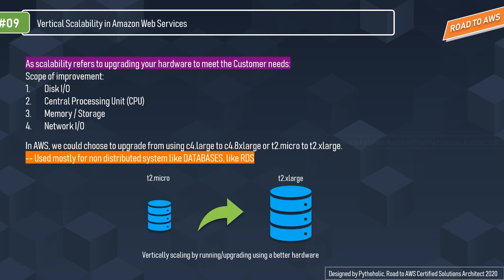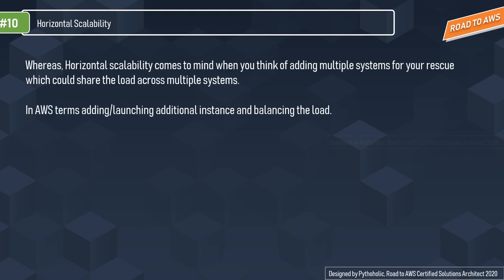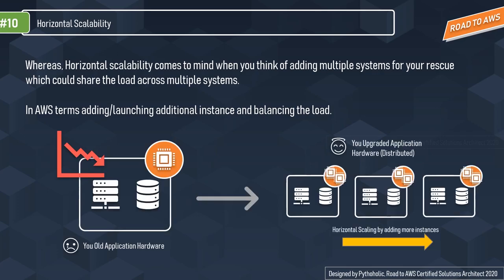On AWS, we can scale up by upgrading instances from c4.large to c4.8xlarge, or from t2.micro to t2.xlarge. Vertical scaling is most used for non-distributed systems like RDS databases. However, targeting improved performance carries a higher risk of downtime than horizontal scaling because it is a single point of failure.